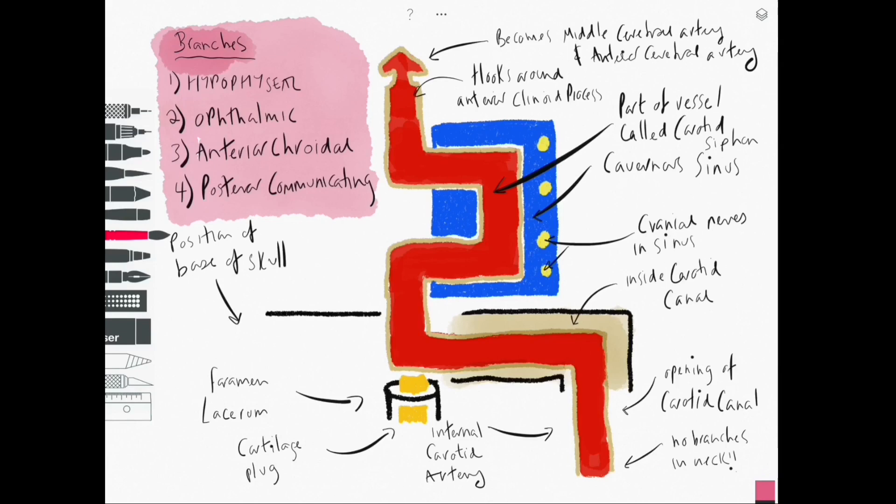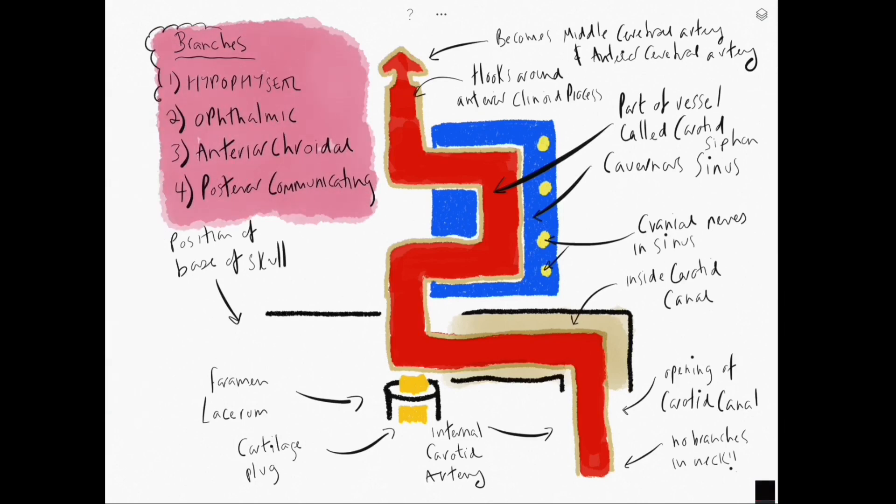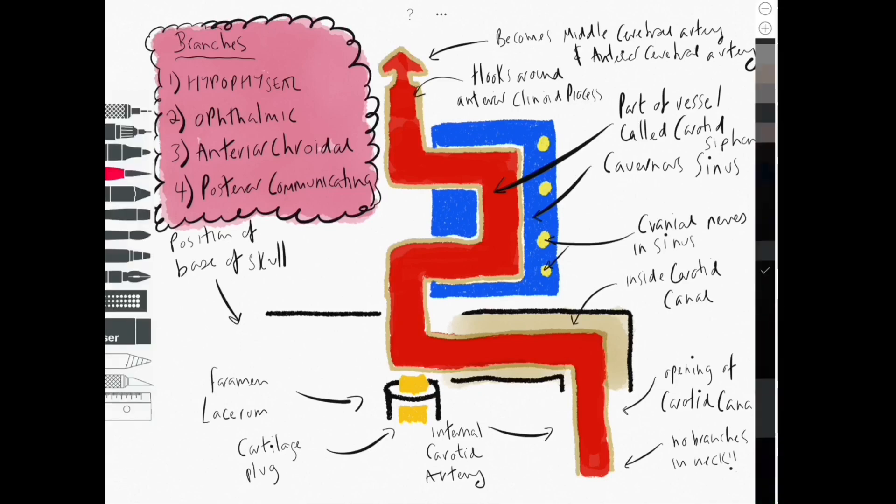The anterior choroidal vessel would supply the hippocampus, the amygdala, nuclei of the thalamus and the very distal portion of the posterior limb of the internal capsule and is one of the most distal branches.